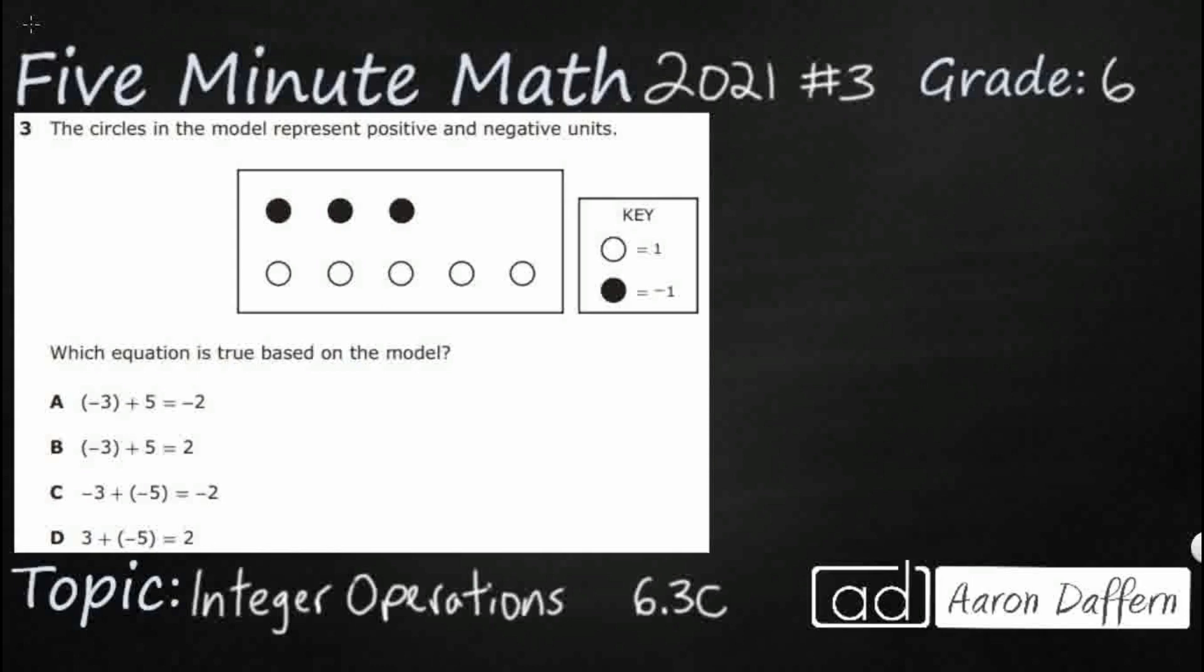So we have a model here. We've got three closed dots, five open dots, and we are supposed to use that to represent an integer operation. Now we do have a key, but if you haven't noticed, this key is going to be very tricky simply because they actually kind of flipped the order.